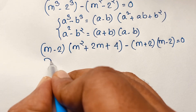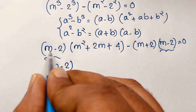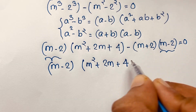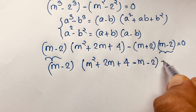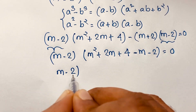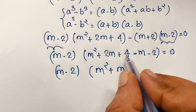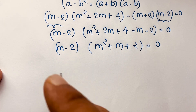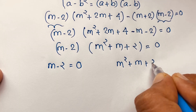You can see m minus 2 appears in both terms, so m minus 2 is common. Taking m minus 2 as a common factor gives m minus 2 times m squared plus 2m plus 4 minus m minus 2, equals 0. Simplifying the bracket: m squared plus 2m minus m plus 4 minus 2 equals m squared plus m plus 2. So we have two cases: m minus 2 equals 0, and m squared plus m plus 2 equals 0.